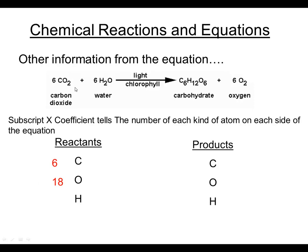Moving on to oxygen atoms on the reactant side: there are two in each molecule of carbon dioxide times six molecules, giving 12. Then in water, there is one oxygen atom per water molecule times six water molecules, giving six. Adding the two together gives 18 total oxygen atoms. For hydrogen, the only source on the reactant side is water—two atoms per molecule times six molecules gives 12 atoms of hydrogen.